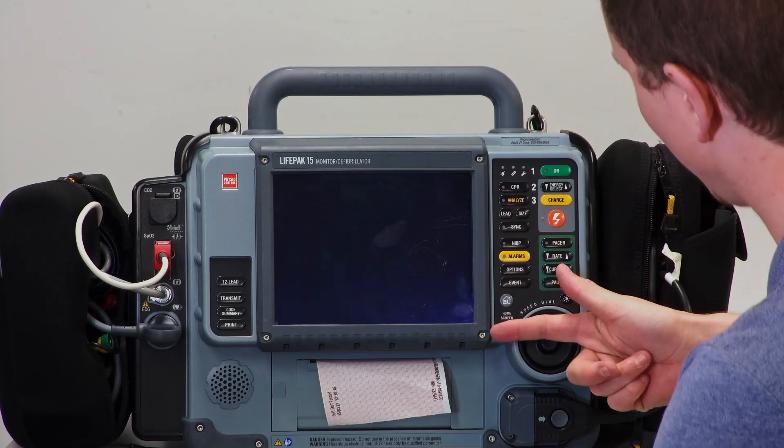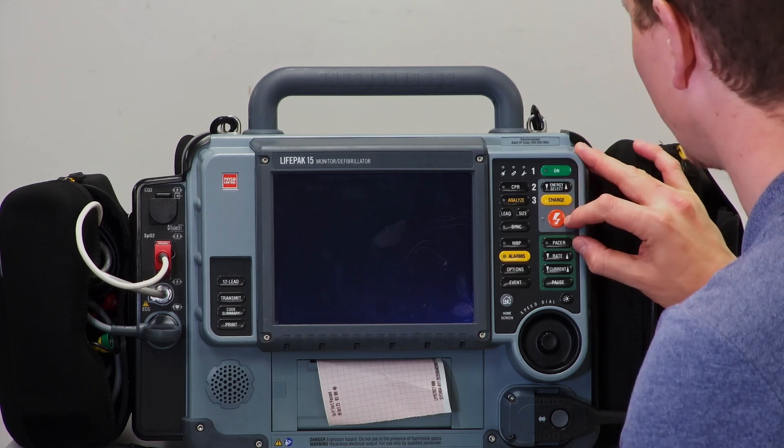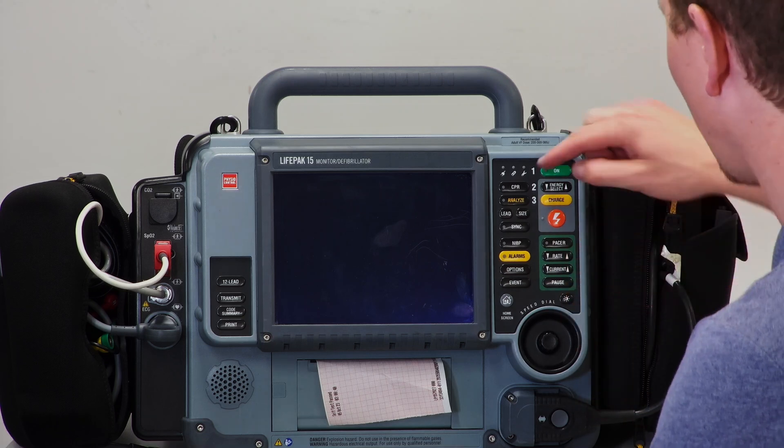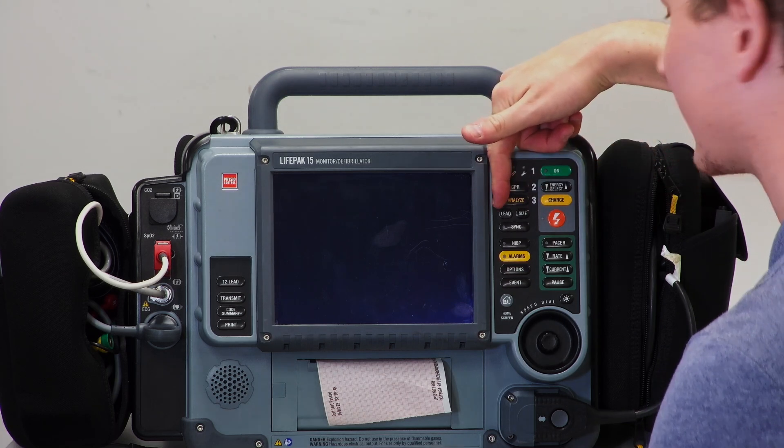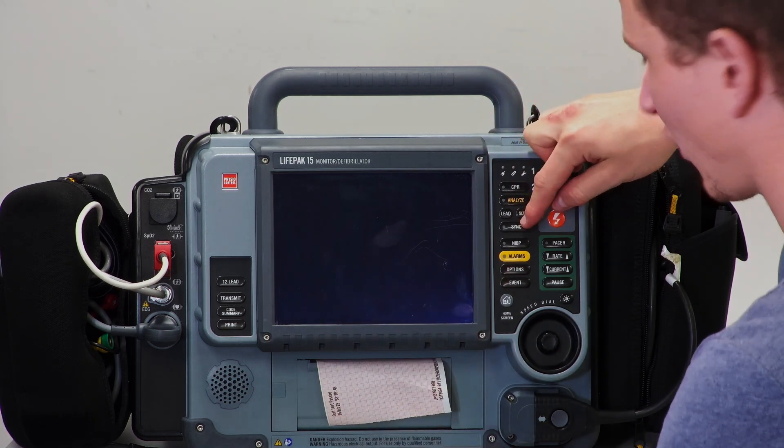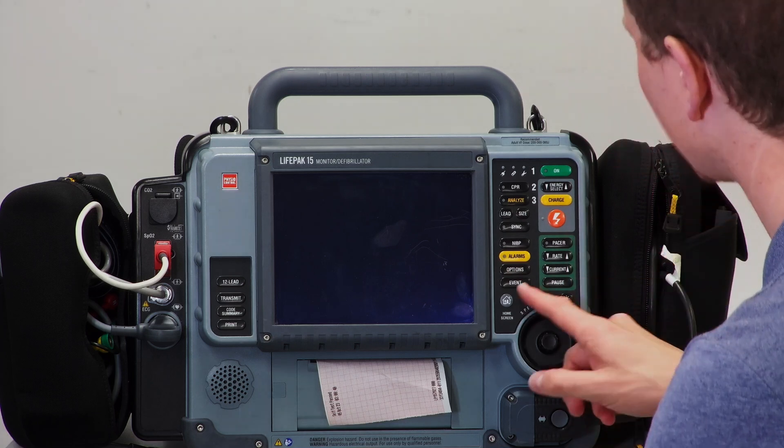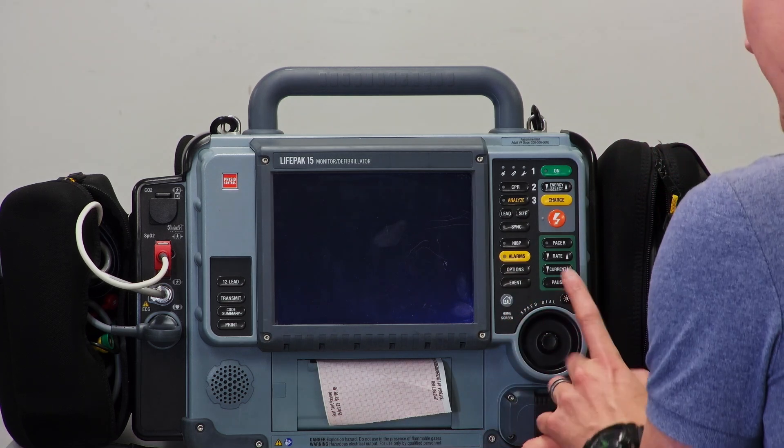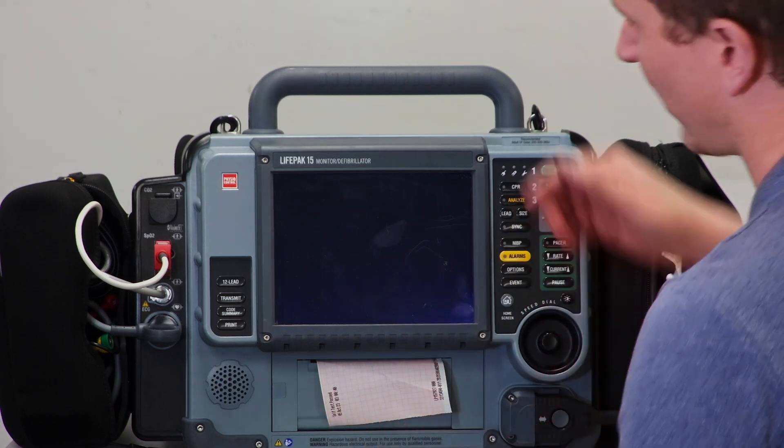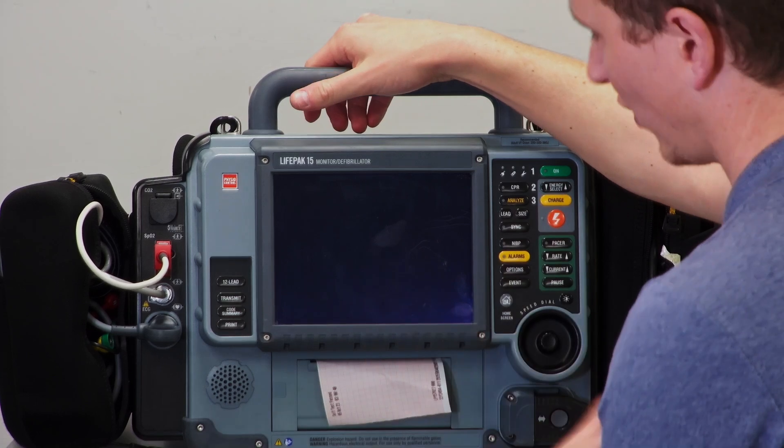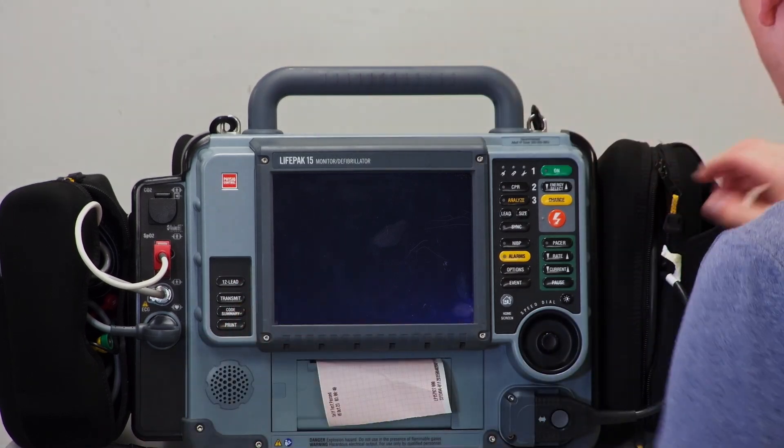On the right here we have all the buttons: the green button for on, then in the gray square is your defib button for selecting energy, charging, and shocking. The green square is your pacing. Then we have CPR which turns on a metronome, analyze for AED function, lead to select which lead you're on, lead size to change amplitude, sync for cardioversion, NIBP to start blood pressure, alarm to adjust alarms, options to change settings, events, home button, light button, 12-lead for ECG transmission if your system is set up for it, code summary to print a code summary, and printing to start printing.